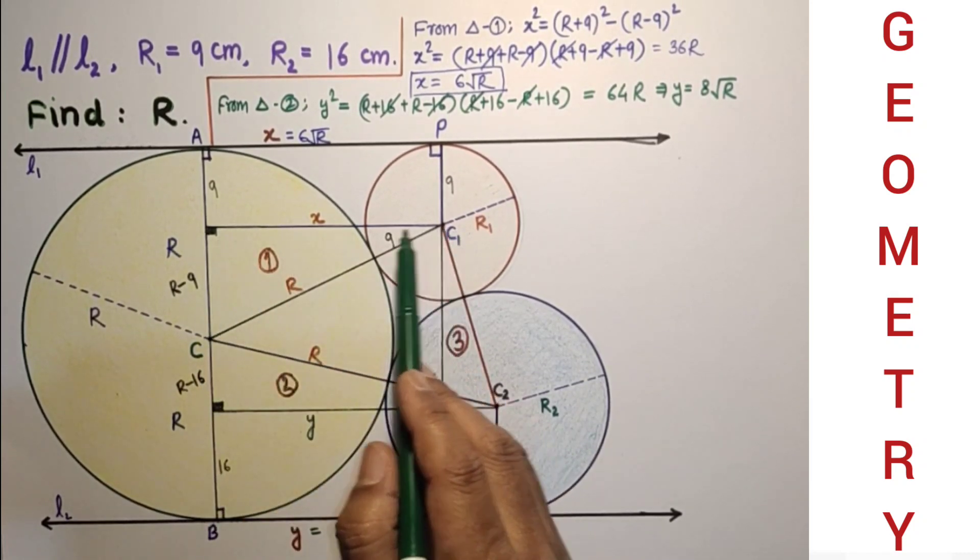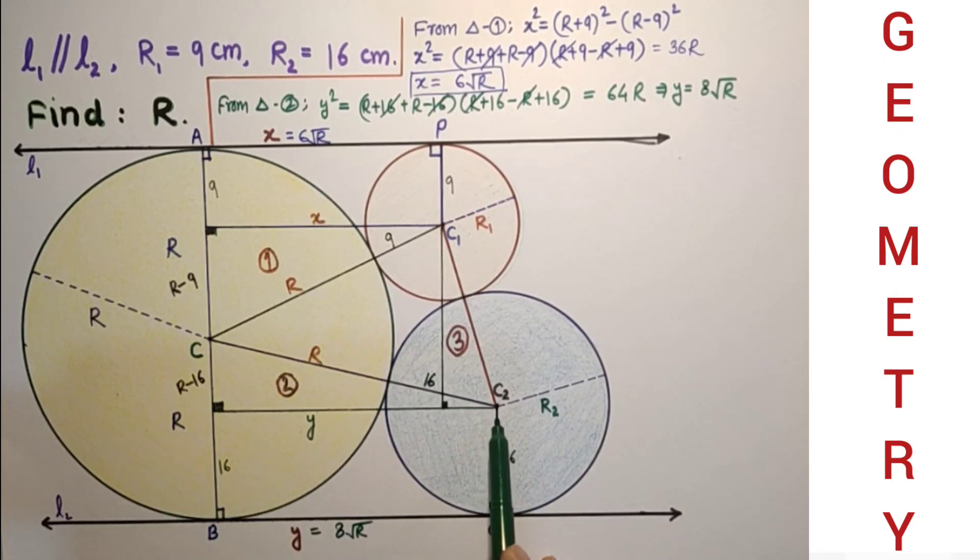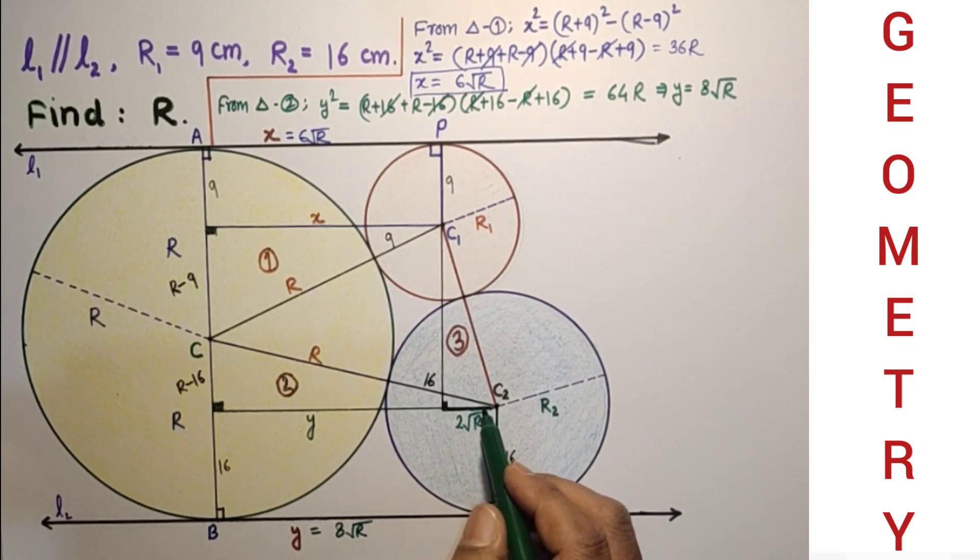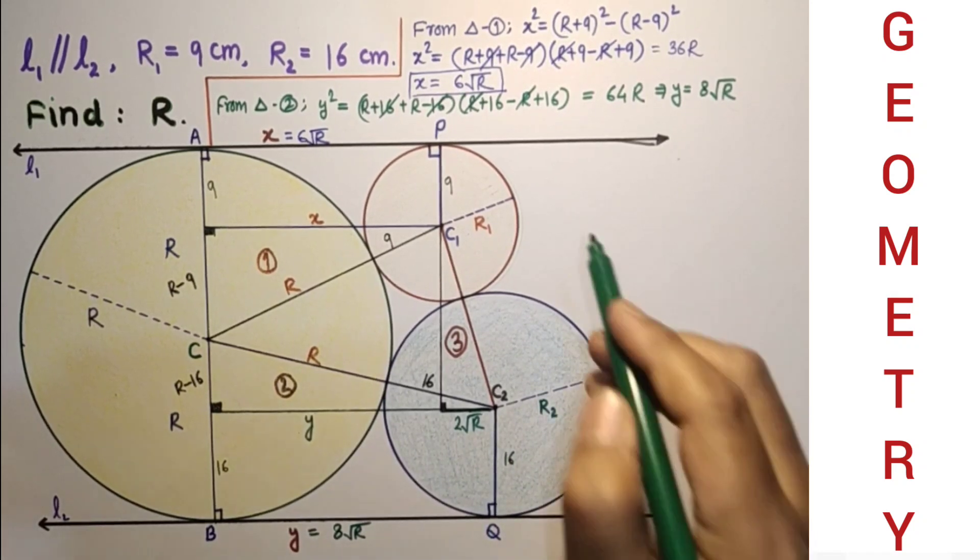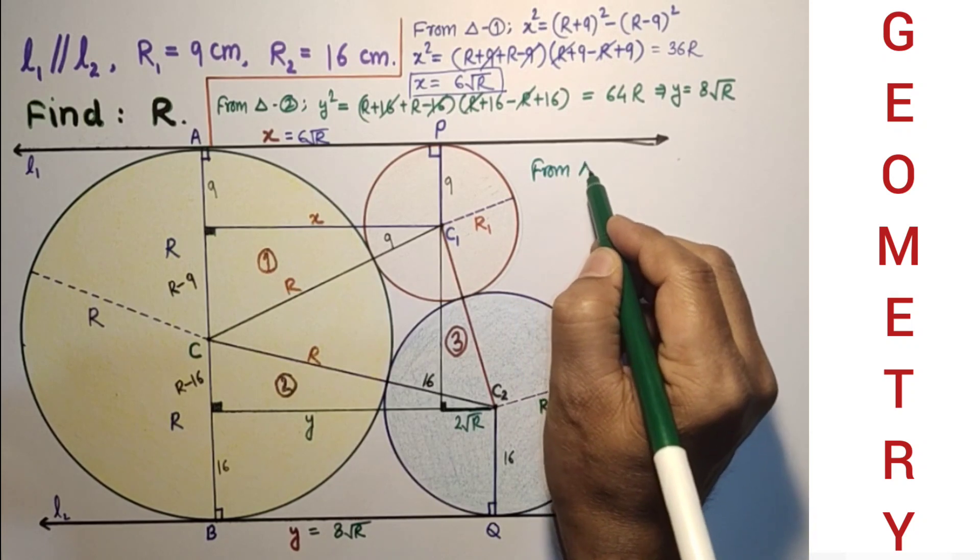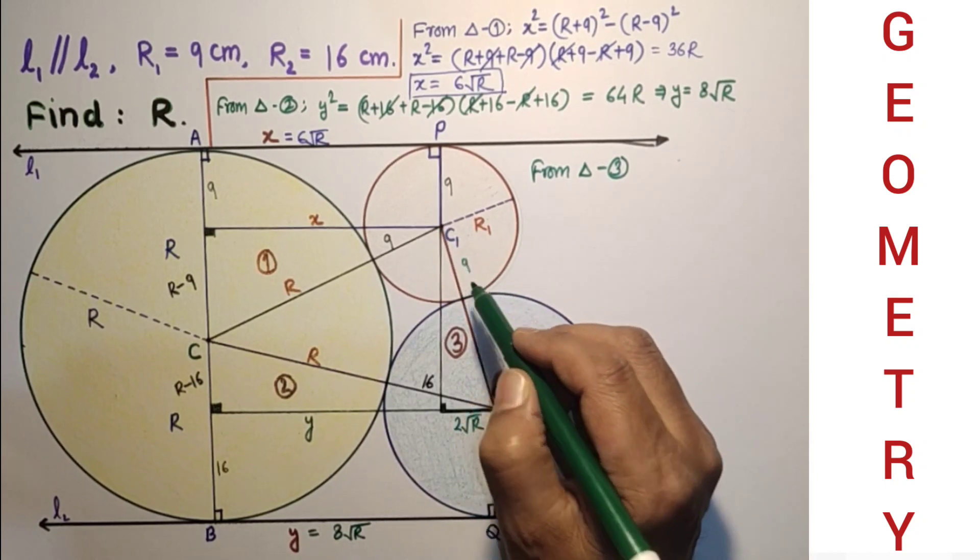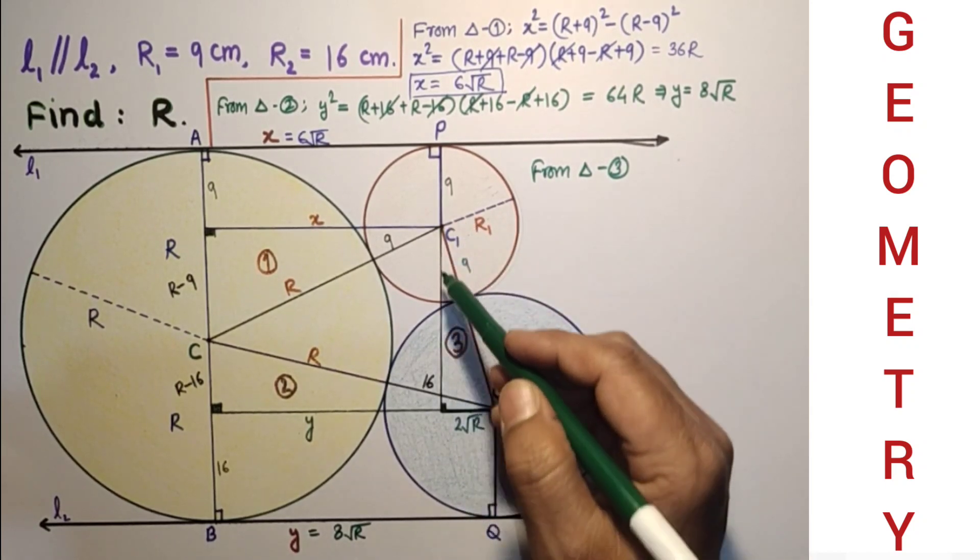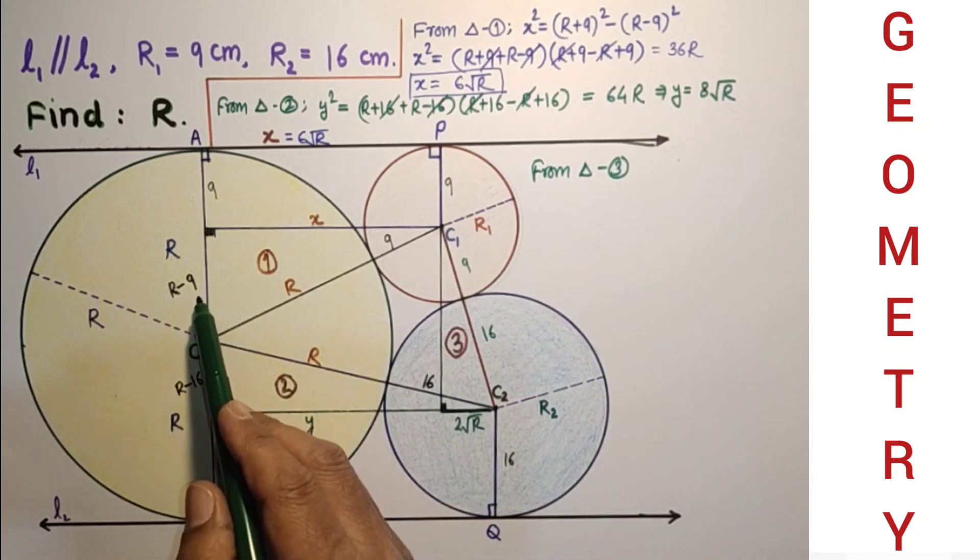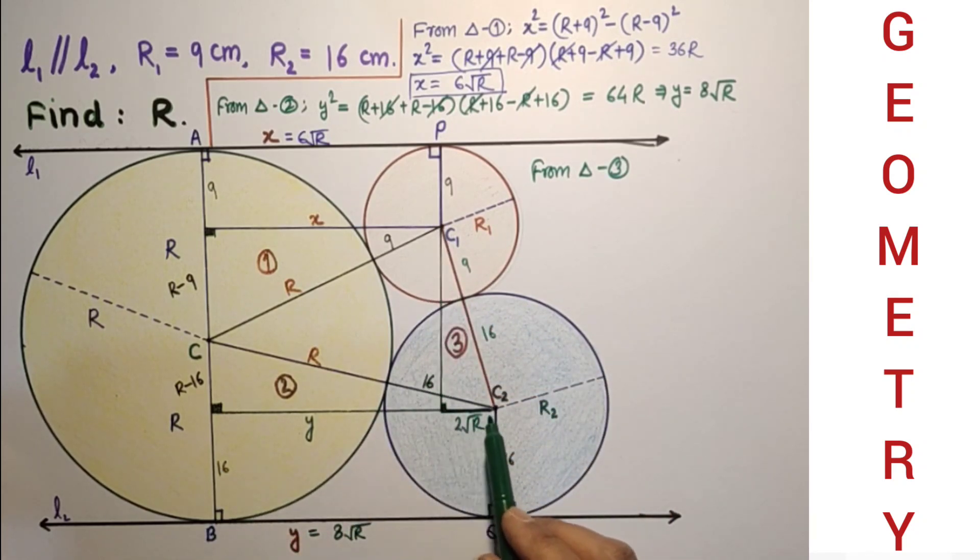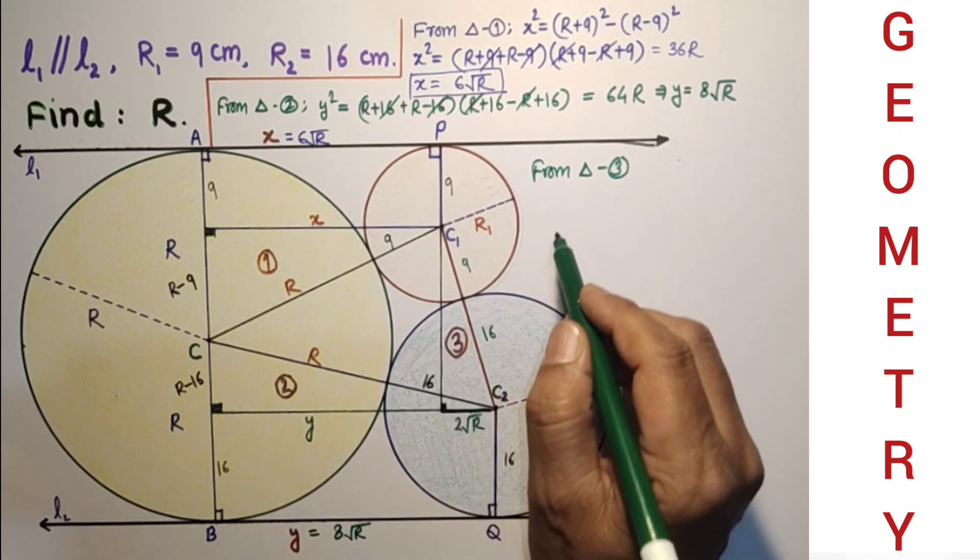From here to here it is 6√R, from here to here it is 8√R, so to get this part only: 8√R minus 6√R which is 2√R from here to here. Now from triangle 3, this is C1 plus this is R1 plus R2, this is 9, this is 16, so 25. And this is R-16 plus R-9, this length will be 2R minus 25. This is 2√R, so we can use Pythagorean theorem here.